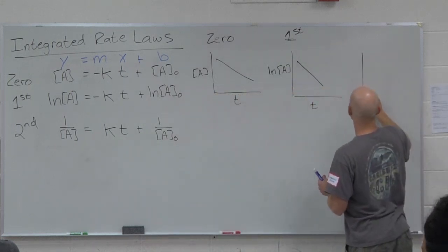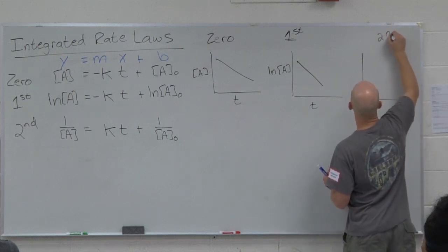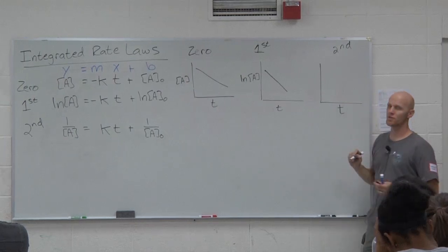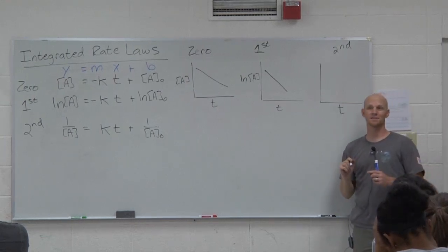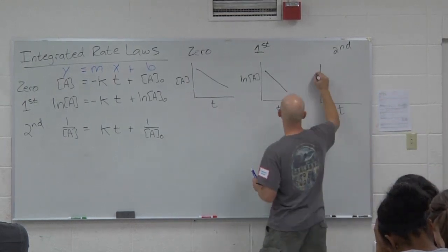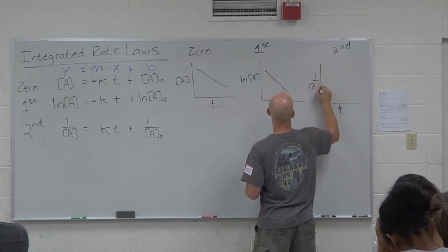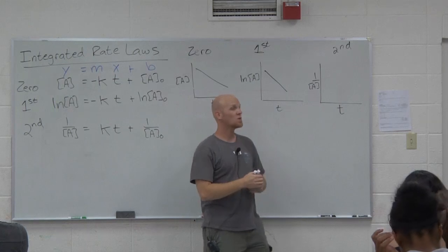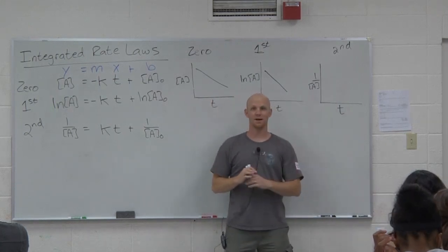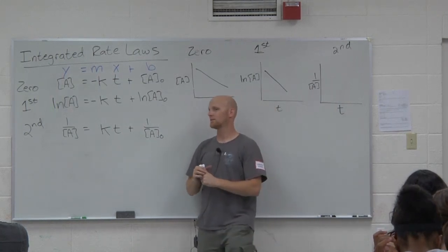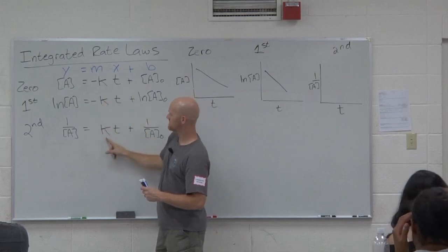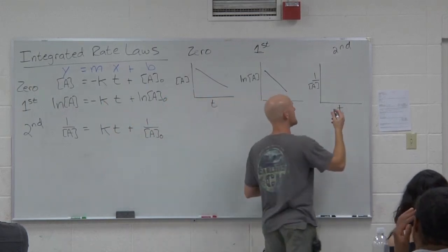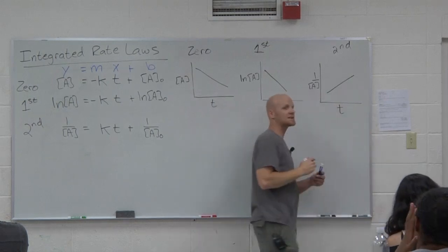And last but not least, second order. Still going to put time on the x-axis. What do I need to put on the y-axis to get a straight line for a second order reactant? One over A. What's another way of writing one over A? A to the negative one. Same diff. So what's my slope for a second order plot? Positive k. This is the only one that should have an uphill slope, not a downhill slope.